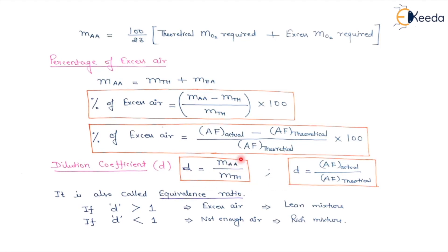If the dilution coefficient B is greater than 1, actual air is more than theoretical air, meaning the amount of air is more than the fuel — this will be a lean mixture, where fuel is less and air is more. If the dilution coefficient is less than 1, actual air is less than theoretical air, meaning not enough air for combustion of the fuel. That will be a rich mixture, where air is less than the theoretical air and there will not be proper combustion of the fuel.